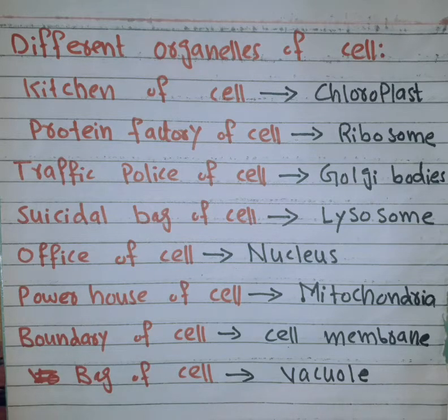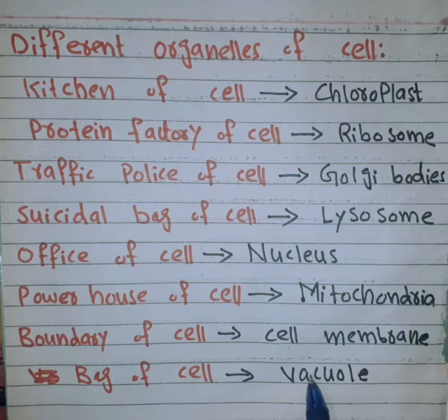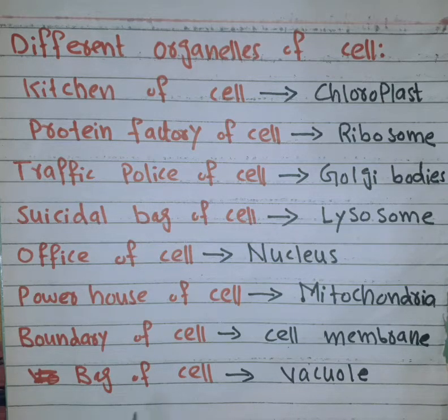The cell membrane is made of proteins, carbohydrates, lipids, and water. These components make up the back and boundary of the cell.